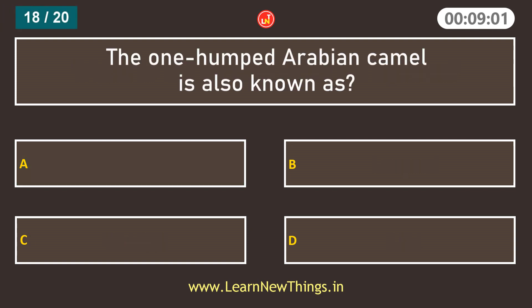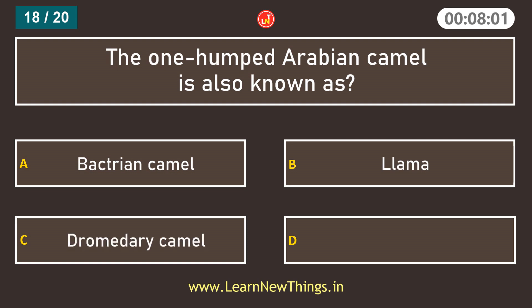The one-humped Arabian camel is also known as the Dromedary camel.